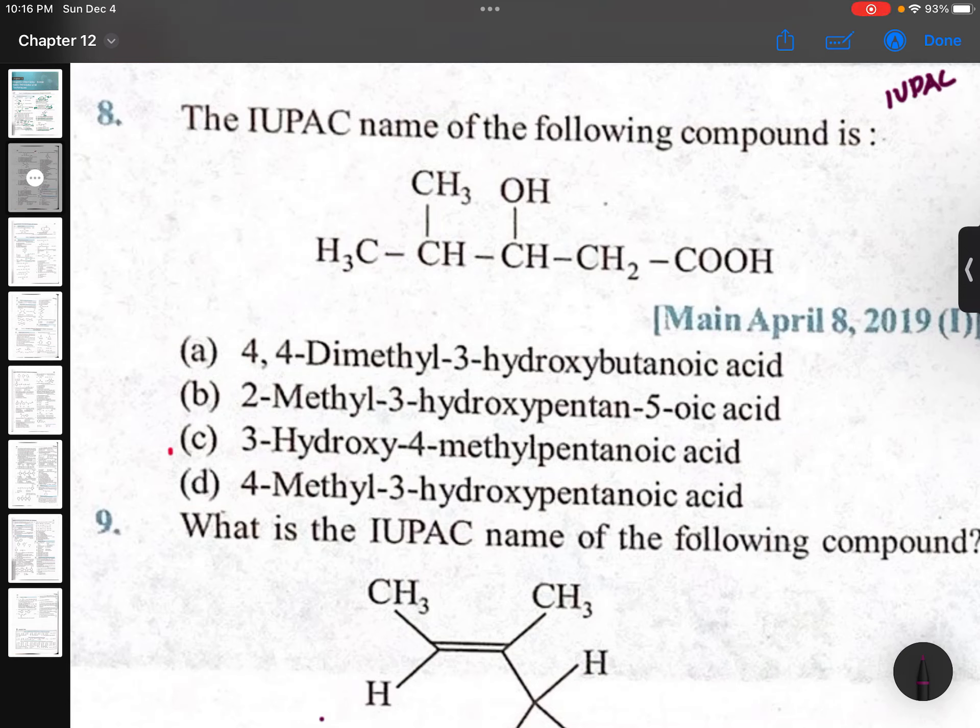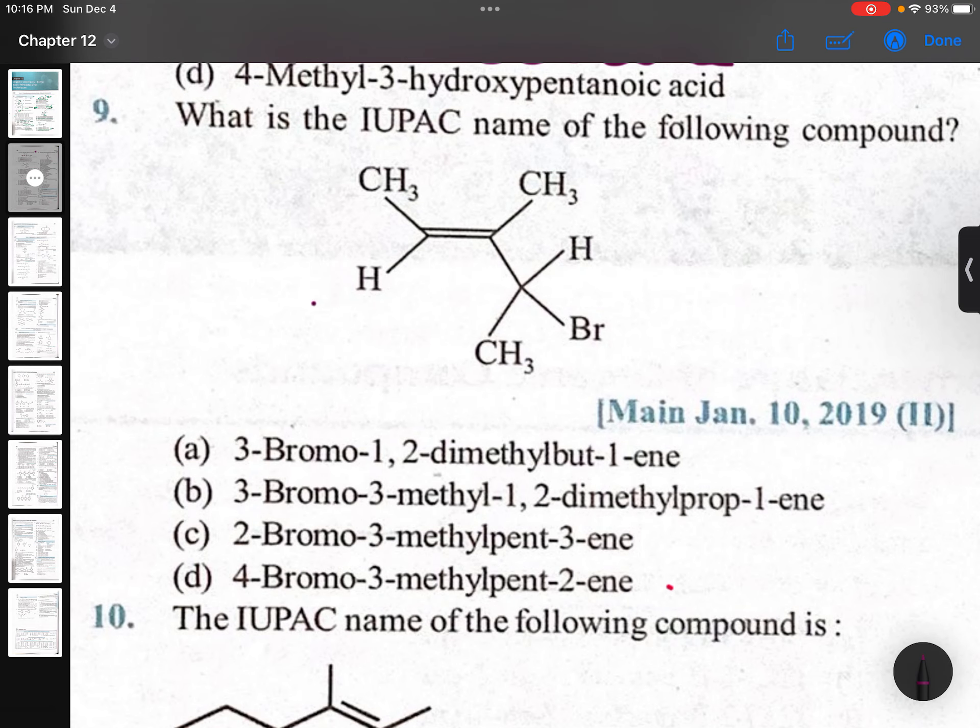IUPAC nomenclature questions from previous years - if you learn all these, that's more than sufficient. Priority: one, two, three - hydroxy, four, methyl. For 3-hydroxy-4-methyl pentanoic acid, here priority double bond gets more priority, first place, second place.